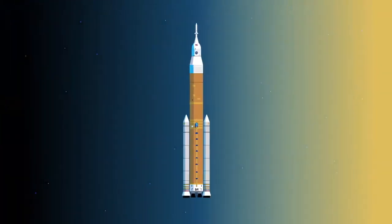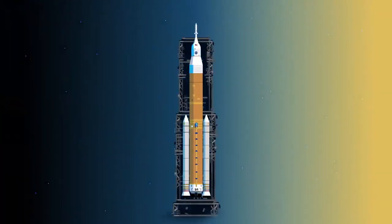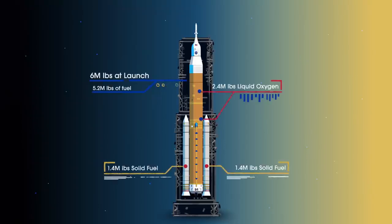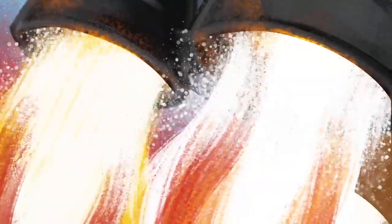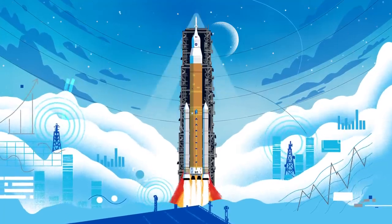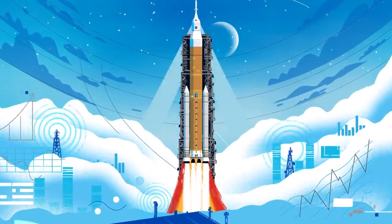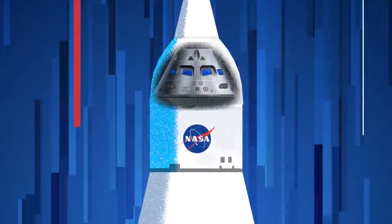Sitting on the launch pad, the entire rocket, fully fueled, weighs just over 6 million pounds, 5.2 million of which is just the fuel. Once ignited, there is no stopping what comes next. All four RS-25 engines and the two solid rocket boosters come to life thundering our crew upwards.